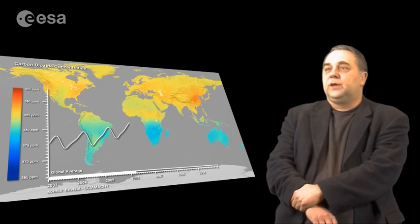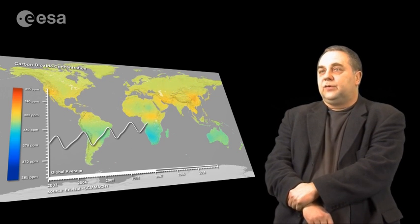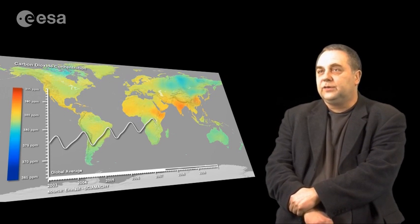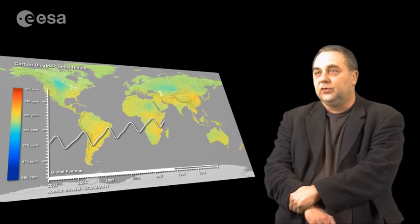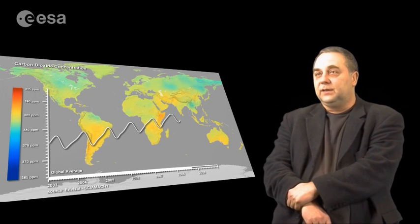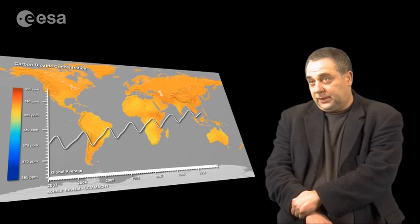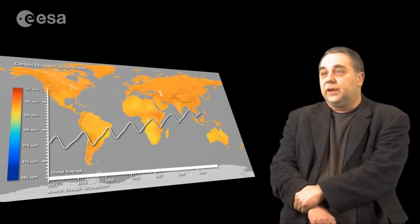When we started with this project, we had only limited time series available. For example, for Skiyamaki CO2 only a few years and for the GOSAD data only a few months. And now we have essentially processed all the Skiyamaki data set covering more than 10 years. And we also have first multi-year GOSAD data. We also significantly improved the accuracy.